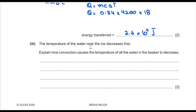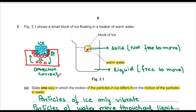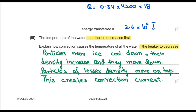Part three explains how convection causes the temperature of all the water to decrease. The ice cools the particles near it. Those cooled particles increase in density and sink to the bottom of the beaker. The less dense, warmer particles near the bottom then rise to the top. This creates a convection current which spreads the cooling effect throughout the water.